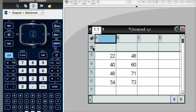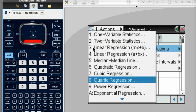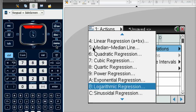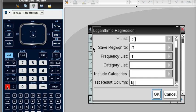And I'm looking for logarithmic regression. B. Remember, my y list is in B. And tell the calculator, put my answer in C. Change that. Hit OK.